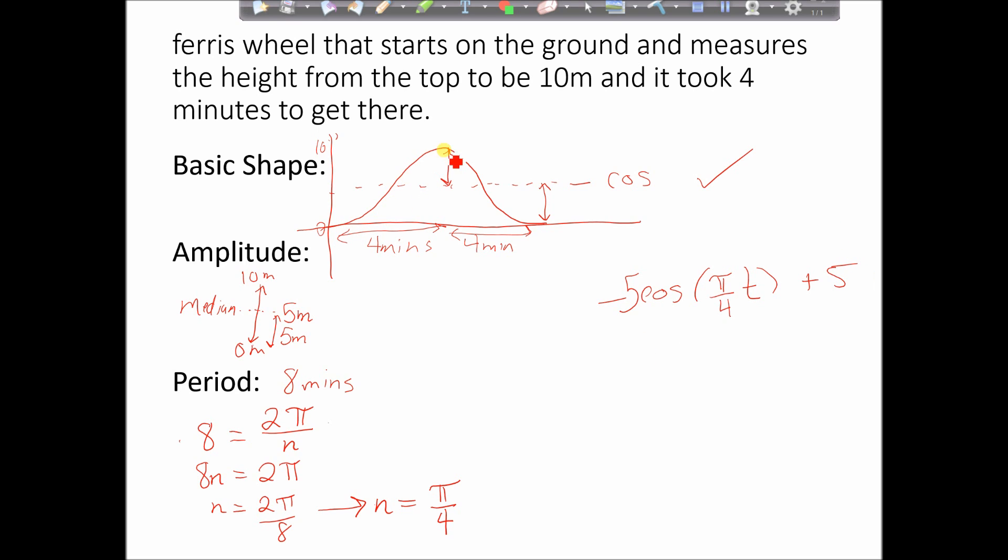So we started with figuring out the basic shape to determine what type, whether it's sine or cos. Also from that, we figured out that it had to be negative because it starts at the bottom and then goes up, using a little bit of arithmetic to figure out the amplitude and the period. So let's write a clear answer at the end. We'll do h(t) is equal to negative 5 cos. We like to write it as πt over 4 plus 5.